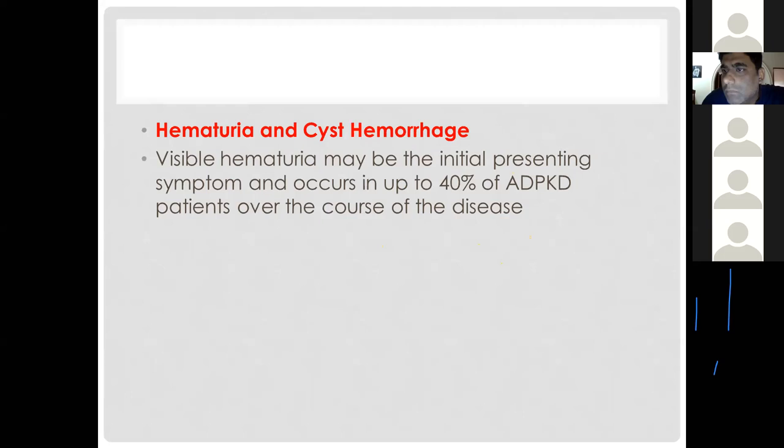Cyst hemorrhage can lead to hematuria; visible hematuria may be the initial presenting complaint in up to 40 percent of ADPKD patients. Hematuria can result from cyst hemorrhage, UTI, or stone disease.